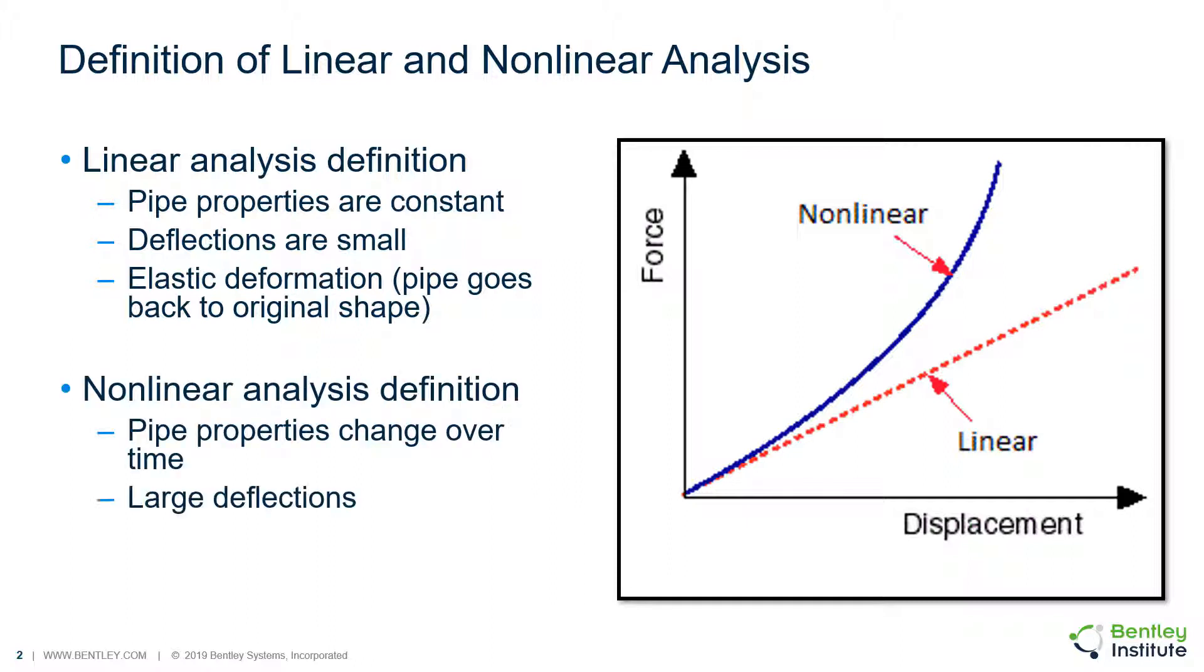Characteristics of a nonlinear analysis are the pipe properties change over time, there are large deflections, and plastic deformation can occur, which means that the pipe is permanently deformed when it's unloaded. The relationship between how much force causes a set amount of displacement changes, and that is why it's called nonlinear.